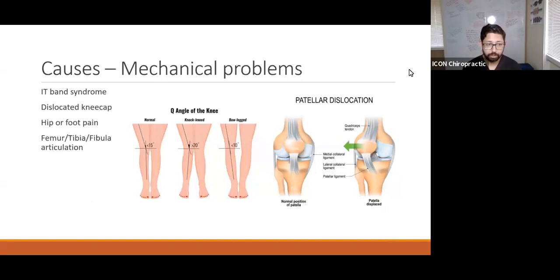Then there are mechanical problems: IT band syndrome, dislocation of the kneecap, hip and foot pain, and femur-tibia-fibula articulation. Everyone's femur isn't pointing straight down - it points down at an angle, and your shin comes up at a different angle. We want this to be under 15 degrees, and we call this the Q angle. If it's over 15 degrees, your knees are bent inward, putting pressure on the inside part of your knee, or your knees could be bowed, putting pressure on the outside. Both can cause a great deal of pain.